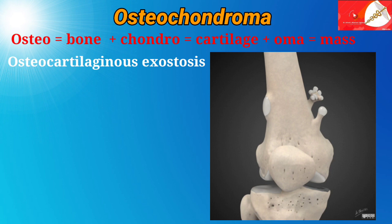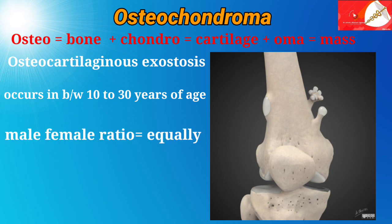Osteochondroma occurs between the ages of 10 to 30 years and affects males and females equally.